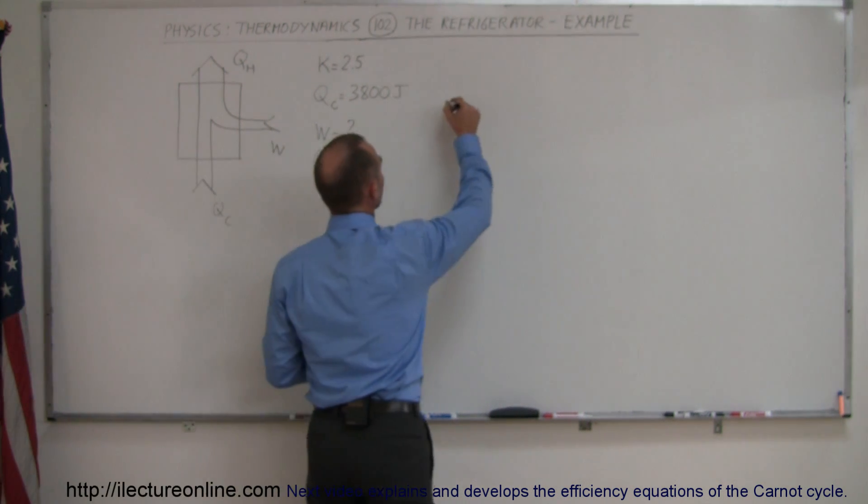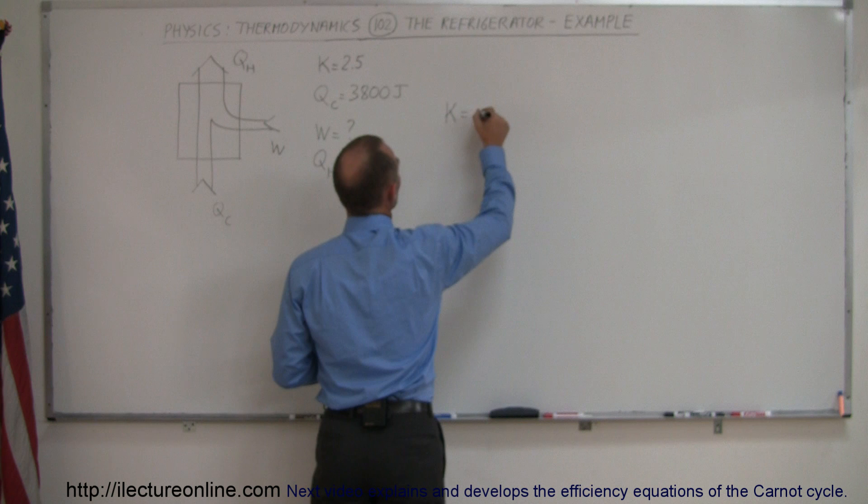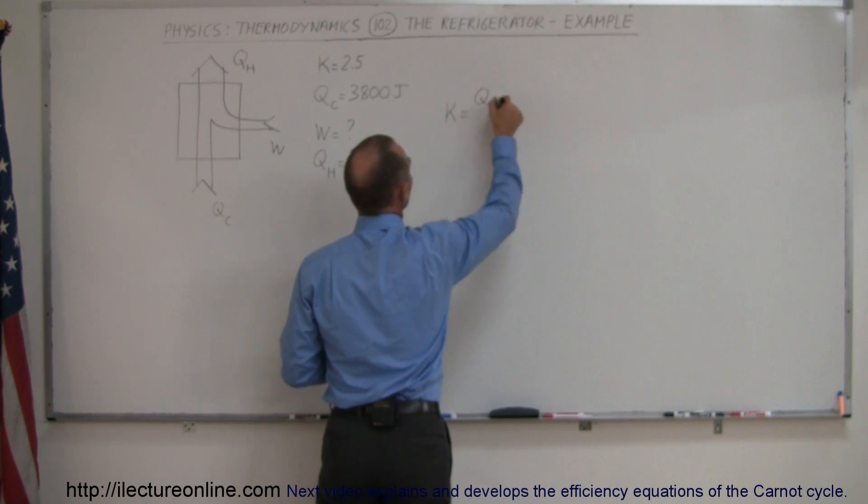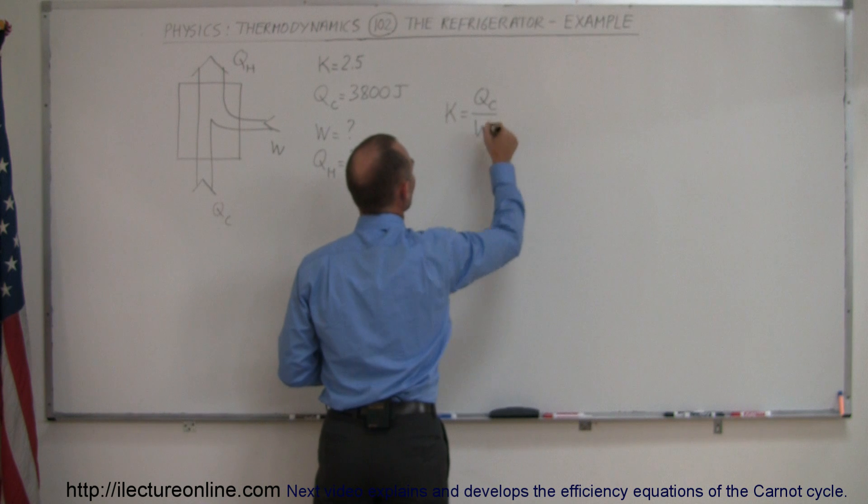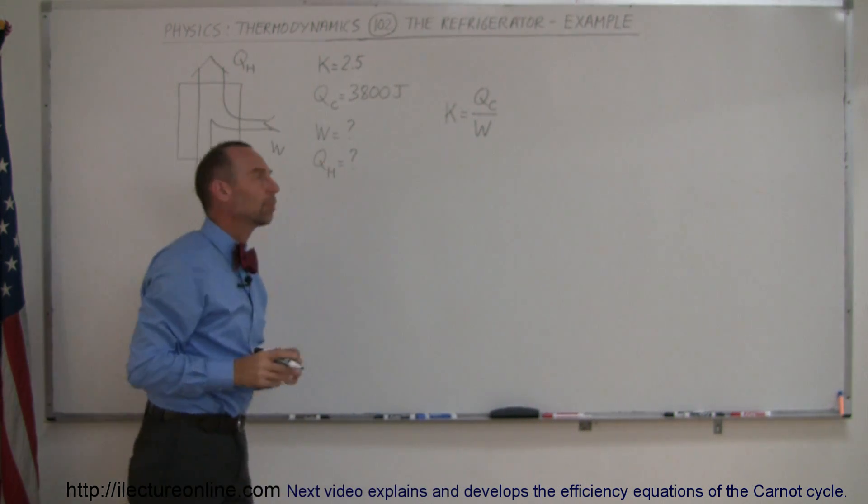Remember the equation that K, the coefficient of performance, is equal to the amount of heat that we grab out of the refrigerator, Q cold, divided by the amount of work we do to accomplish that.